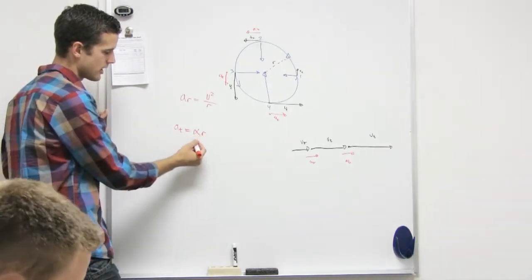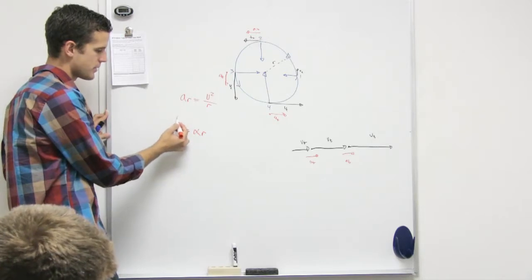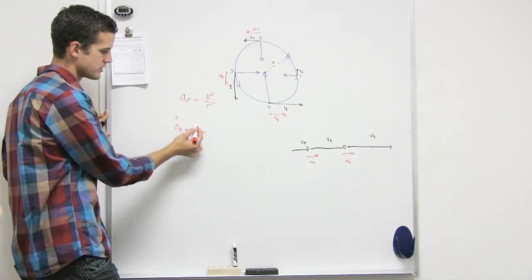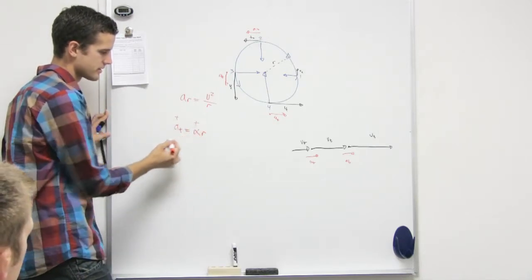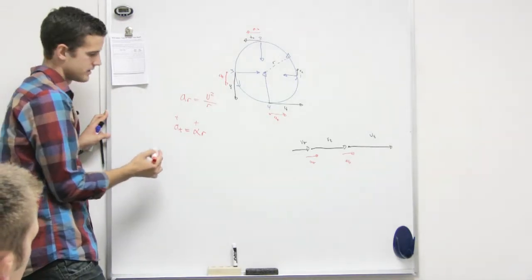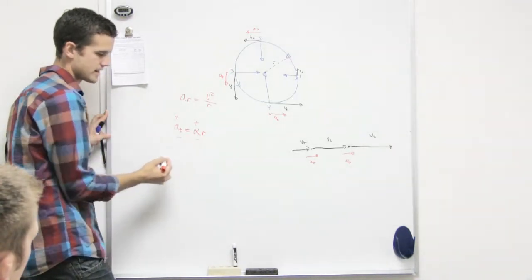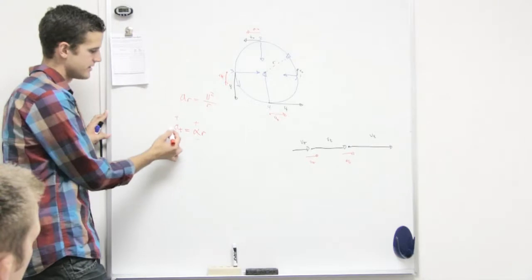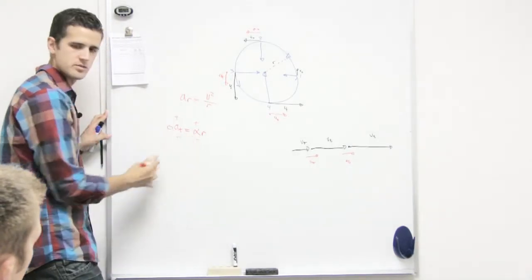So we already said that r isn't going to change. So if a_t is positive, that means alpha is going to be positive. If a_t is negative, that means alpha has to be negative. If a_t is zero, that means alpha has to be zero.